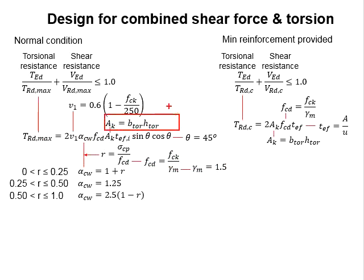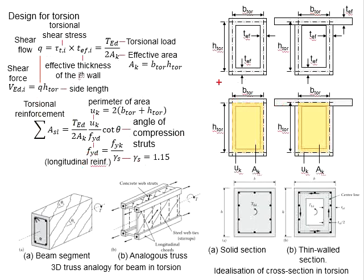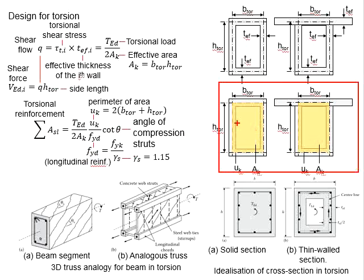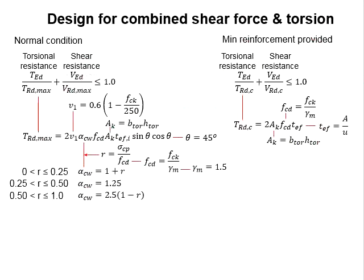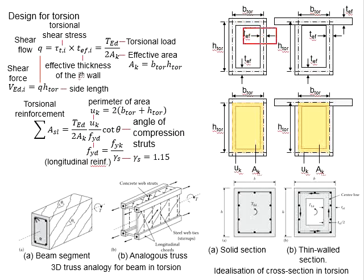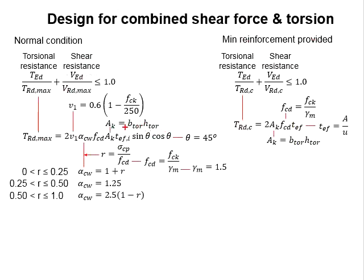Next you need to determine fcd, which appears in the equation, along with ak — the effective cross-sectional area of the section subjected to torsion, obtained from the diagram indicated. Then determine the effective wall thickness of the section. Finally, substitute the angle of the compression strut for torsion, which is taken as 45 degrees.